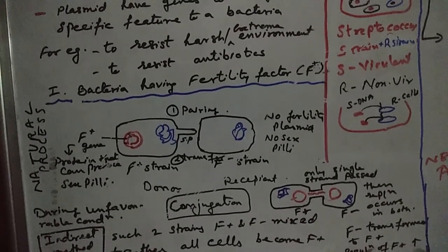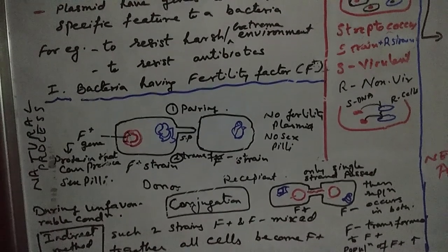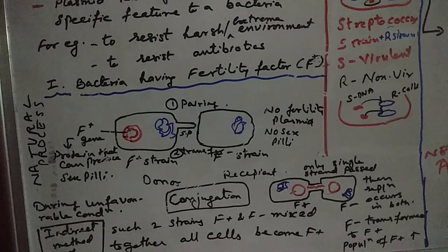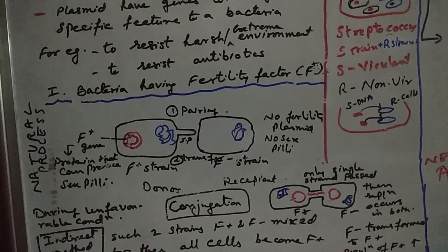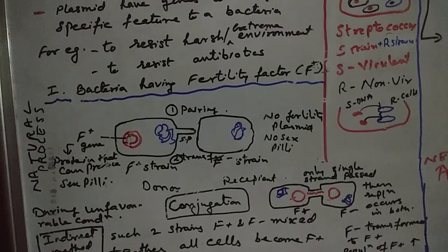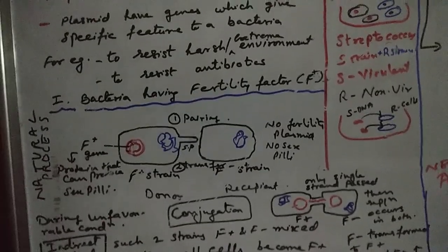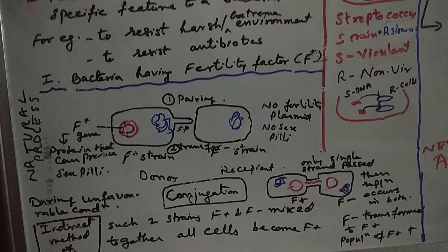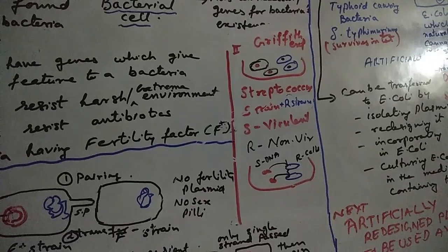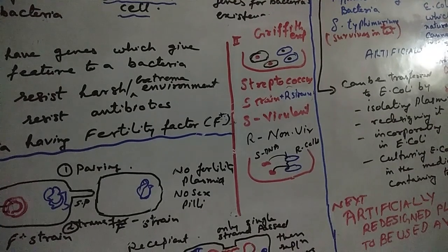So only the single strand passes, then replication occurs in both cells, and the F− strain is transformed to F+. The population of F+ increases — they have converted the F− strain like their own. When F+ and F− strains are naturally mixed together, all the cells eventually become F+. This is also known as an indirect method of reproduction.